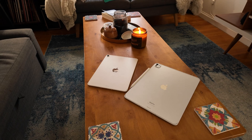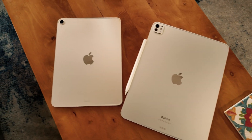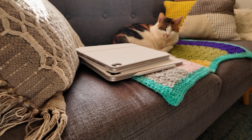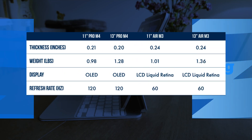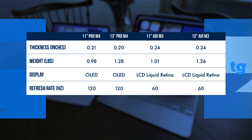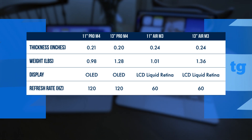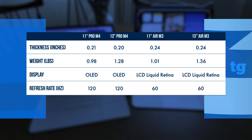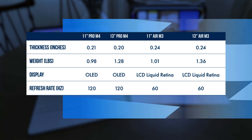As an avid iPad user, I can clearly distinguish which one is which, but most people won't find major differences, especially since they come in the same two size options. That said, the iPad Pro is actually thinner and lighter than the iPad Air. It's 0.21 inches thick for the 11-inch version and 0.20 inches thick for the 13-inch model, compared to 0.24 inches for both iPad Airs. The iPad Pro weighs 0.98 or 1.28 pounds compared to the iPad Air's 1.1 and 1.36 pounds. So don't assume the Air is the more portable option — you'd be wrong.